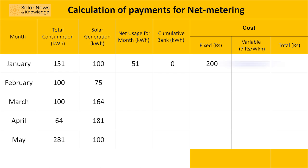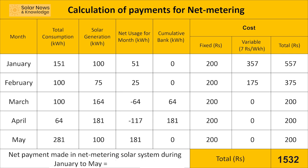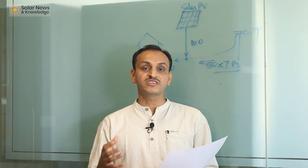The net is the difference between total consumption and solar generation: January is 51, February is 25. In March, solar generation of 164 exceeds consumption of 100, so the net is minus 64 — meaning 64 units are exported to the grid. In April, 117 units are exported. In May, consumption is 281 units and solar generation is only 100, but there were 181 units banked. Those banked units are utilized, and Ramesh only has to pay fixed charges for May.